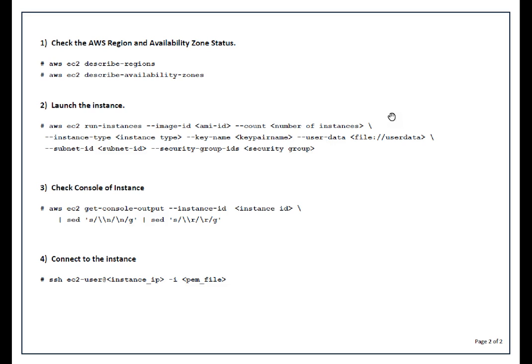Then --subnet-id to specify which subnet you want — I'm going with a public subnet. Then --security-group-id, which is basically the firewall setting — I'm going to use my existing security group created for the web server. Once you run this command it gives you output about your new instance, and you can check the build progress using: AWS EC2 get-console-output --instance-id followed by the instance ID. You can also pipe and decode the output to make it readable. Once your instance is up, connect using SSH and your PEM file.